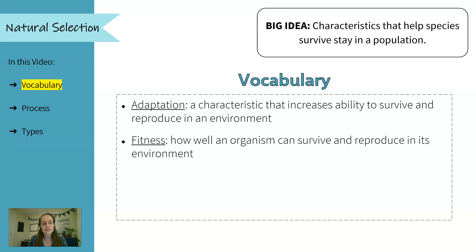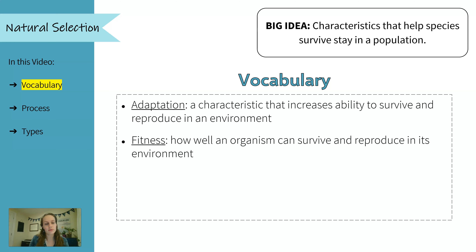Next we have fitness, which is a measure of how well an organism can survive and reproduce in its environment. So if an organism is fit or has a high level of fitness, it's likely to survive and reproduce. And if it has a low level of fitness, then it's less likely to survive and reproduce.